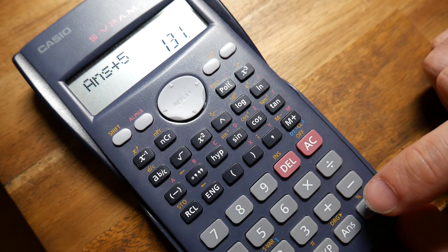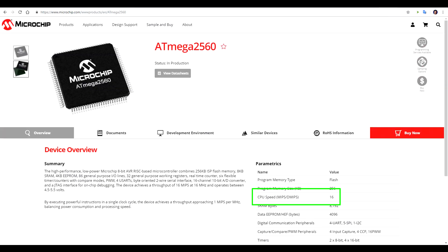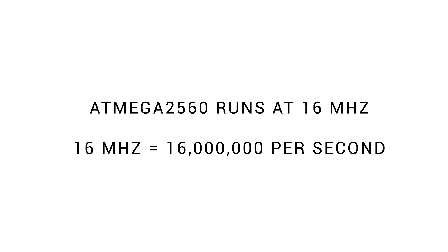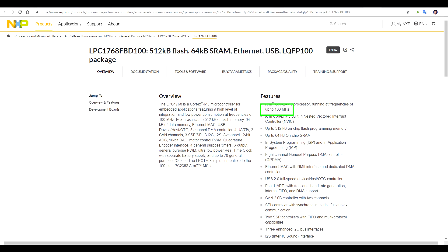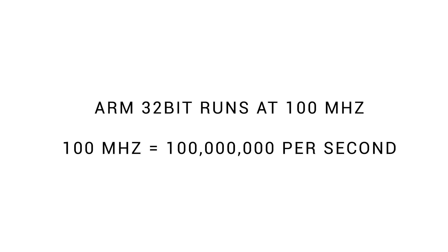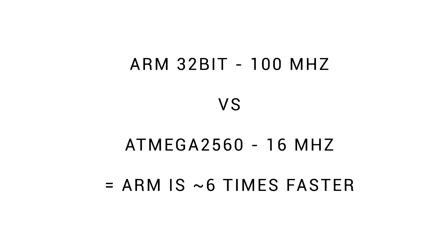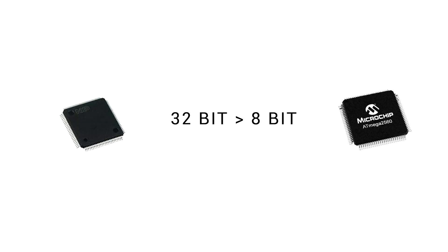Our 8-bit Arduino microcontrollers typically run at 16 MHz, or 16 million cycles per second — it is really fast, but there's a lot of data to process. A typical ARM 32-bit processor runs at 100 MHz, or 100 million cycles per second. It's not quite this straightforward, but it is much, much faster than the 8-bit microcontroller. And remember that not only is it faster, but with each cycle we can crunch a lot more numbers.